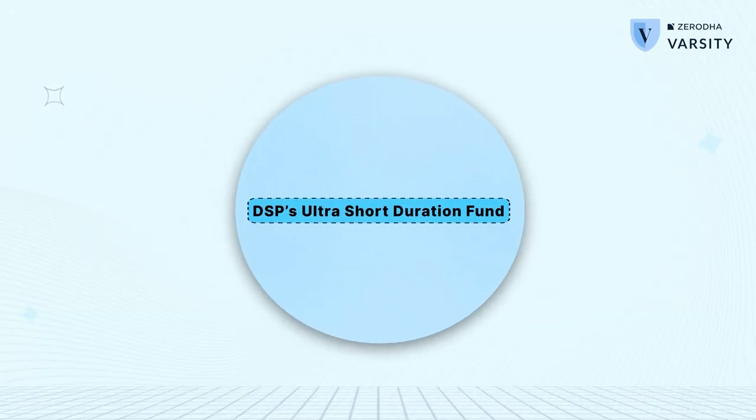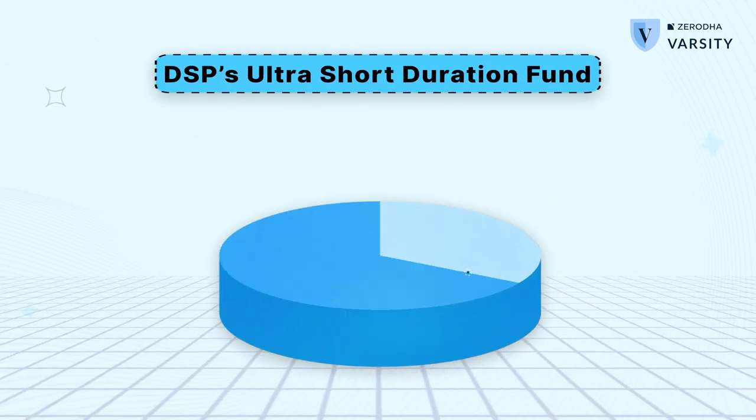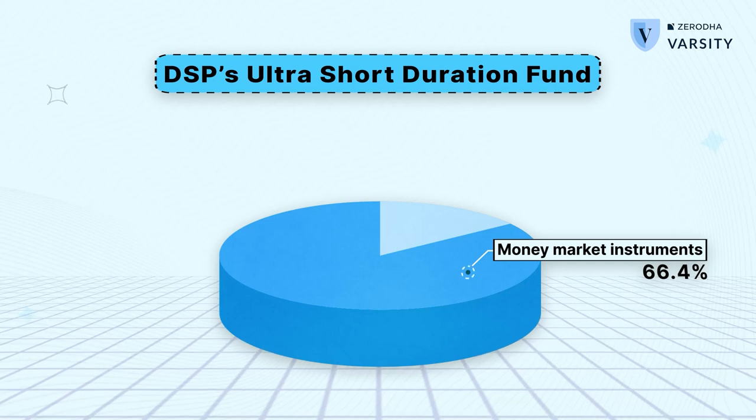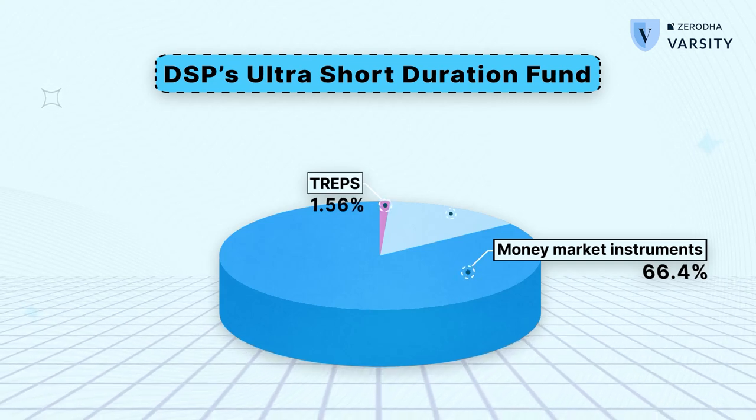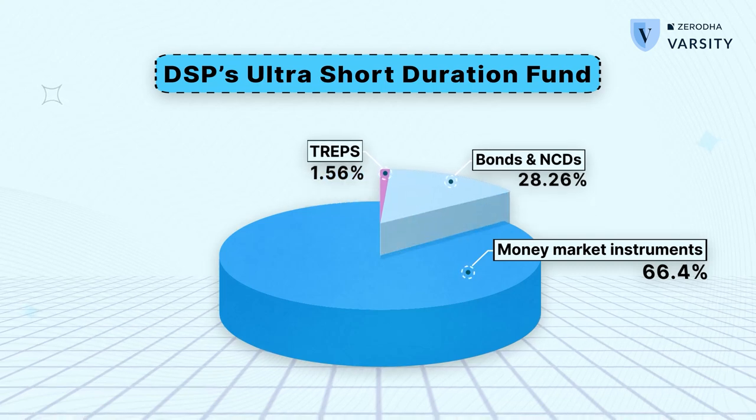For instance, take a look at the portfolio of DSP's ultra short duration fund. The portfolio has money market instruments which have maturities ranging from 1 day to 365 days. There are something called TREPs, which are basically overnight borrowing, and then there are bonds and NCDs with slightly longer maturities than 1 year. You may wonder how bonds and NCDs with maturities over 1 year make their way into an ultra short duration fund. That's because SEBI defines the duration of an ultra short duration fund at an aggregate portfolio level and they don't specify on an individual script level. So it's really the fund manager's job to ensure that all the investments are balanced and the overall maturity of the portfolio is within the prescribed range.